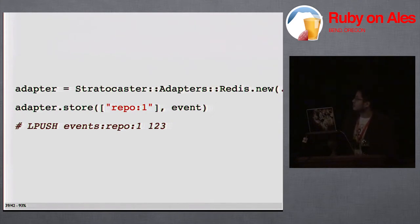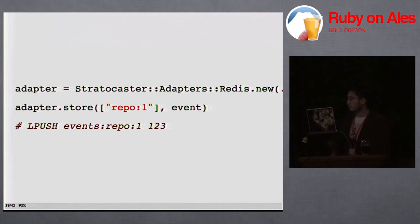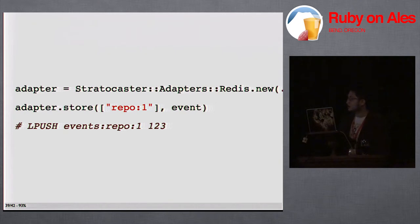This is the internals of what the adapters see. The timeline object passes off to the adapters, and they see basically: here's a key and the event, I want you to store it. The adapter — this is a Redis adapter — has the actual Redis code to push it to a list and all that.